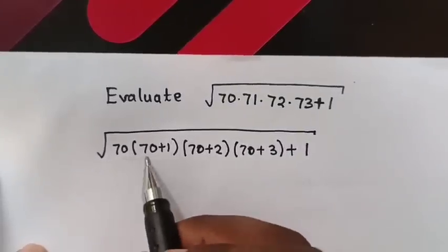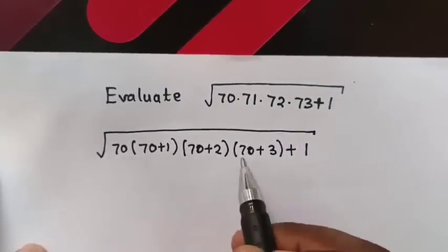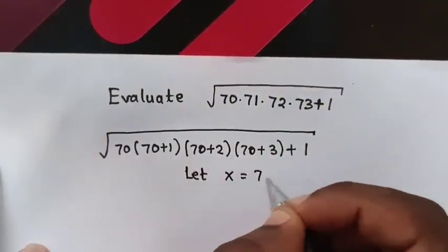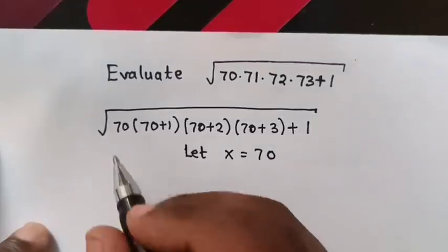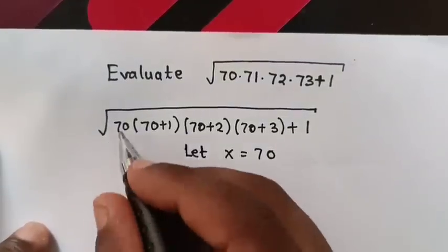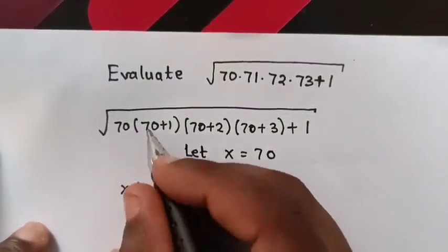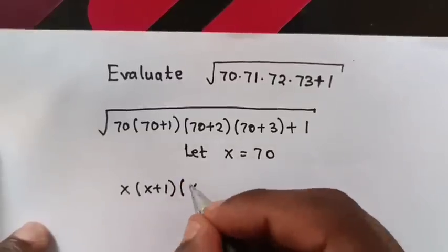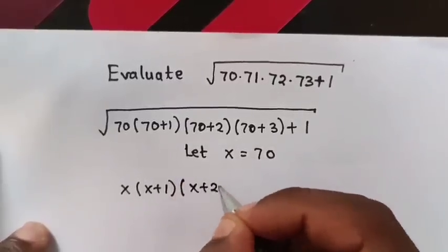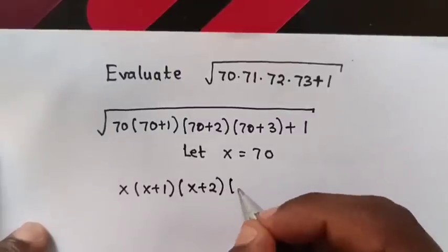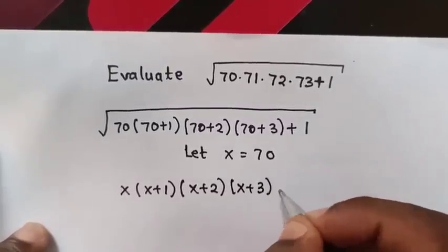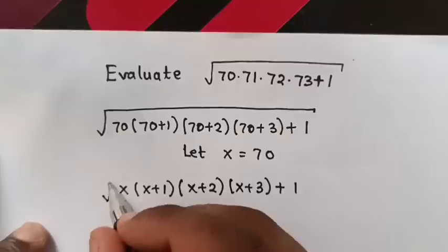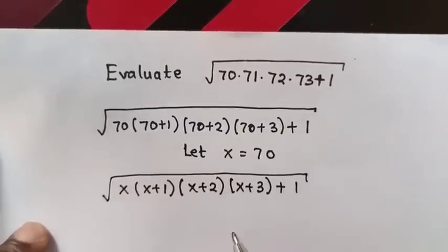You can see that 70 is common, so we let x equal to 70. So it will be x times x plus 1 times x plus 2 times x plus 3 plus 1 — this whole expression under square root.